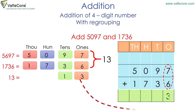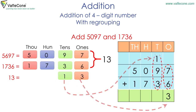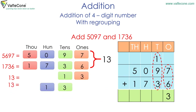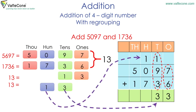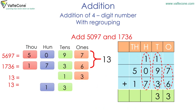So we place three at the ones place and one at the tens place. That is one plus nine plus three is equal to thirteen, which is also one hundred and three tens. Placing three at the tens place and one at the hundreds place. Adding at the hundreds place: one plus zero plus seven is equal to eight. And at the thousands place, five plus one is equal to six.